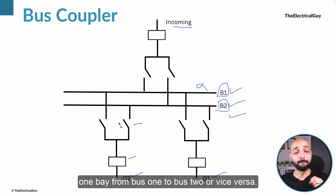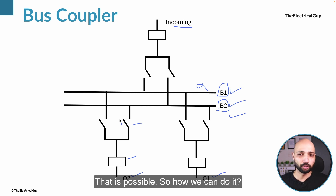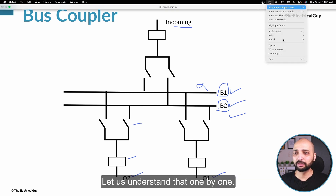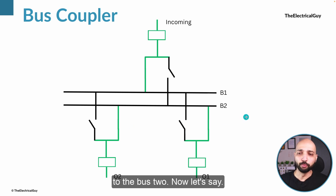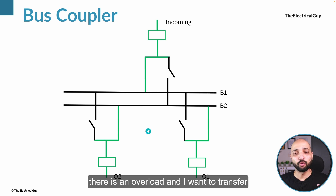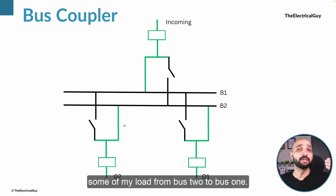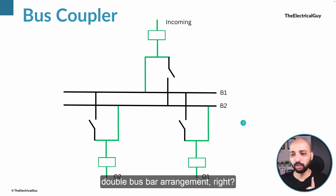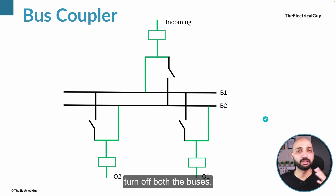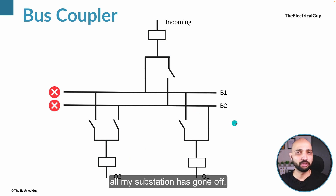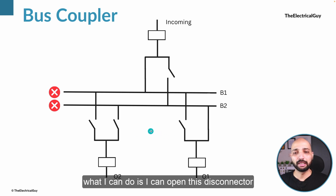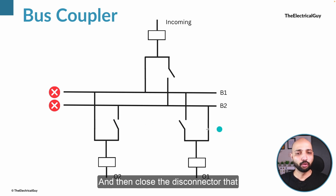Using this arrangement you can also transfer one bay from bus one to bus two or vice versa. Let's say our incoming is connected to bus one and both outgoings are on bus two. If bus two is overloaded and I want to transfer some load to bus one, one way to do it is to first turn off both buses — so there is no supply right now and of course the whole substation has gone off. Then I can open the disconnector connected to bus two and close the disconnector connected to bus one.